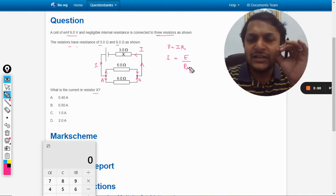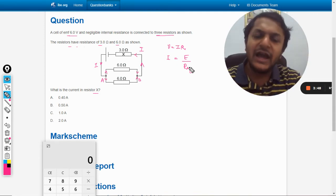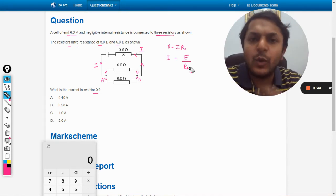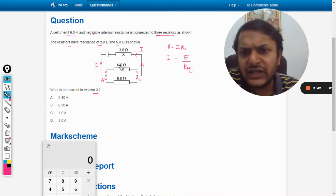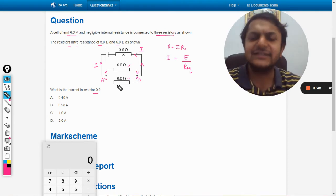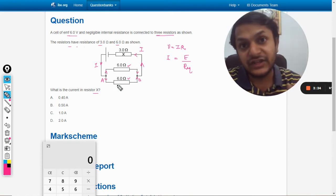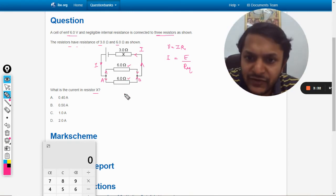So that will give you the total current that is given by the battery, and the total current is passing through X. Now our next question is what is R equivalent? We have to see that this resistance and this resistance, both of them are in parallel and they are further connected with 3 ohm in series. In parallel we use this formula.